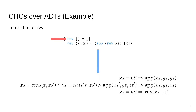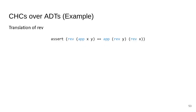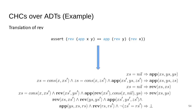Similarly, we can go through the same process for reverse. Because the reverse function depends on the append function, we also have to include its definition. Here's the inductive case of reverse, and then we translate the assertion, giving us the complete system of CHCs for our motivating example.